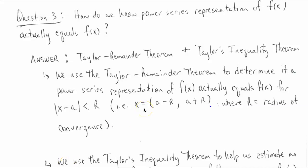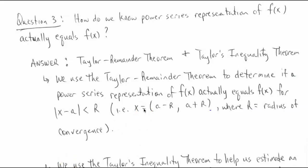For this video, we are going to look at how do we know whenever we have a power series representation of a function that that power series is actually going to represent that function exactly, and for what X values that's going to happen. We have two theorems that give us information on how to do that. The first one is called the Taylor Remainder Theorem and the second one is called Taylor's Inequality Theorem.